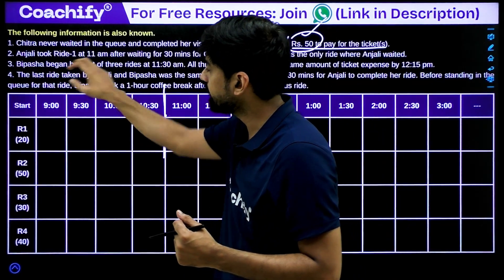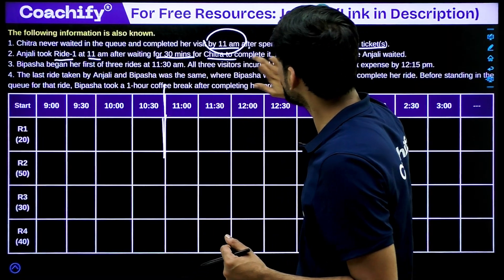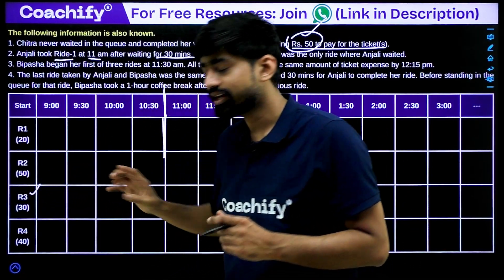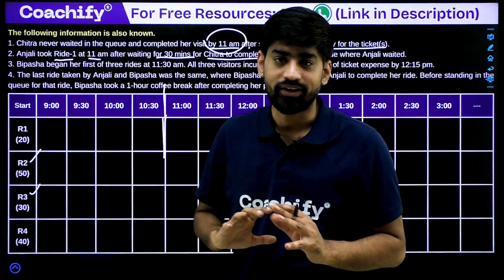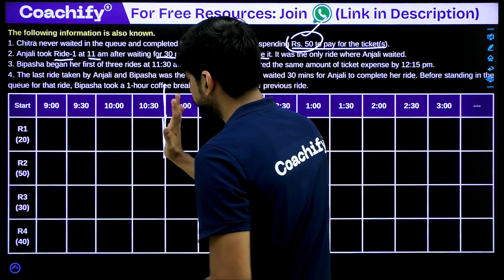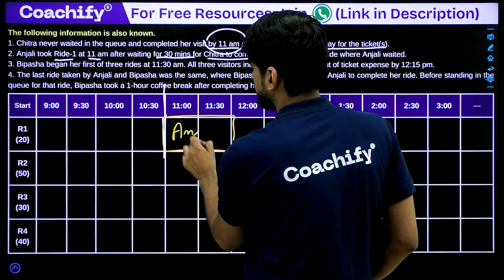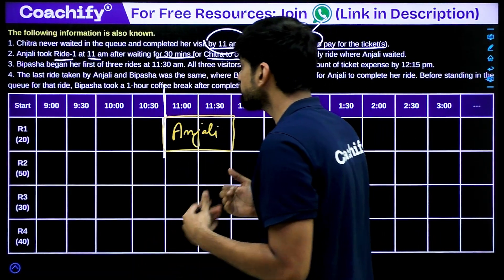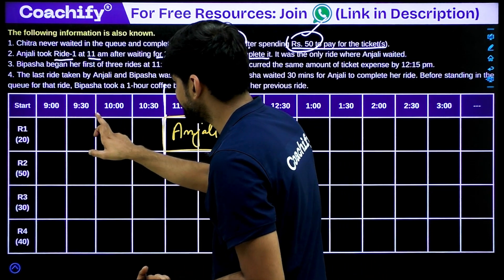The second clue resolves the ambiguity: Anjali took ride 1 at 11 a.m. after waiting 30 minutes for Chitra to complete it. This means Chitra took ride 1 — so Chitra must also be taking ride 3 to reach the 50-rupee total. Chitra was therefore taking ride 1 from 10 to 11, and Anjali waited from 10:30 to 11 before starting. Going further back, Chitra had only the 9 to 10 slot available, so Chitra took ride 3 from 9 to 10.